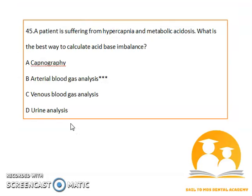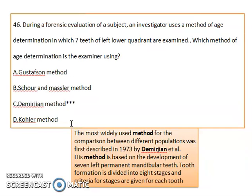A patient suffering from hypercapnia and metabolic acidosis: the best way to assess acid-base imbalance is arterial blood gas analysis.